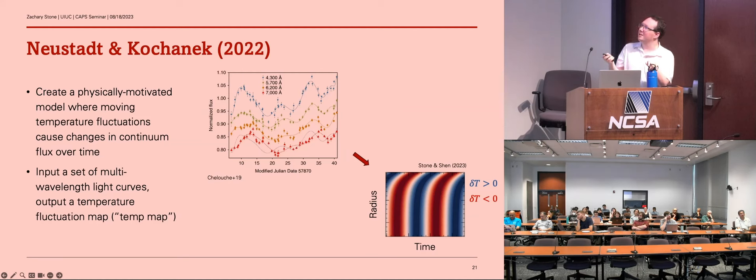Well, this is where this paper, Neustadt and Kochanek, comes in. About a year and a half ago, they came up with this model slash method, this physically motivated model, where temperature fluctuations within the accretion disk generate flux variability within the spectra and the light curves we observe. So their method basically takes a bunch of multi-wavelength light curves, or I guess, if you flip it, multi-epoch spectra, and output a temperature fluctuation map, or a temperature map is what I'll call it. So this is an example of one with lamppost-like signals. Time's on the bottom, radius is on the left. It's log space radius, so it looks kind of weird. But you can see that these fluctuations move quickly outward over time. This is sort of like a wave moving outward over time.